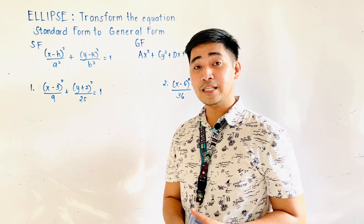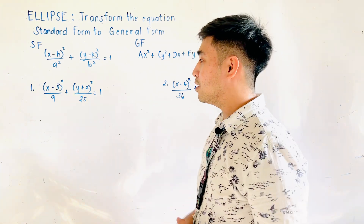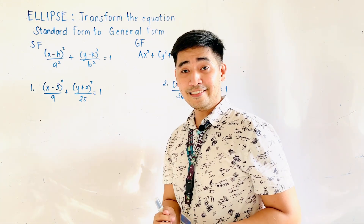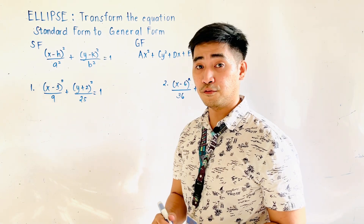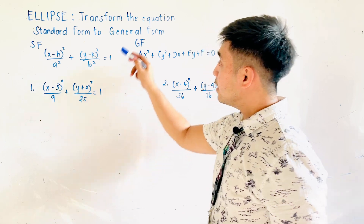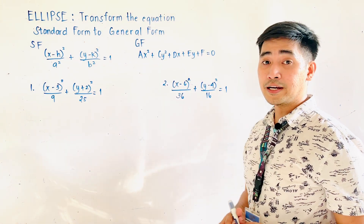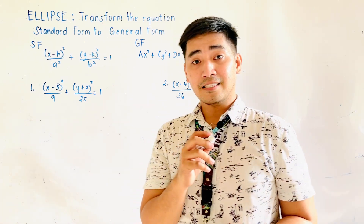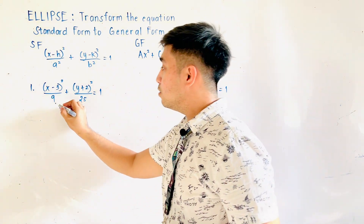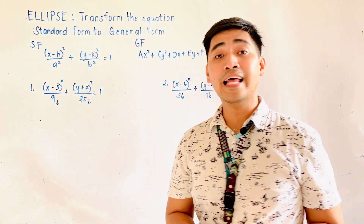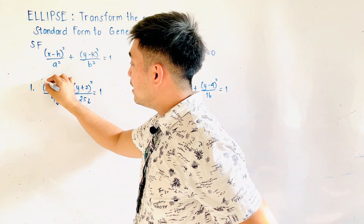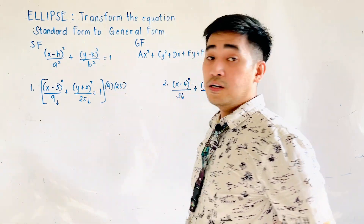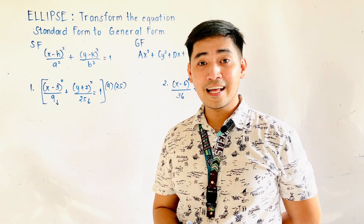We have the quantity (x − 3)² over 9 plus the quantity (y + 2)² over 25 is equal to 1. Note that this is in standard form. Therefore, we need to convert this into the general form: Ax² + Cy² + Dx + Ey + F = 0. In order to eliminate the denominators, we look at the denominators 9 and 25, and we need to multiply both sides by 9 and 25 so that the denominators will cancel out.